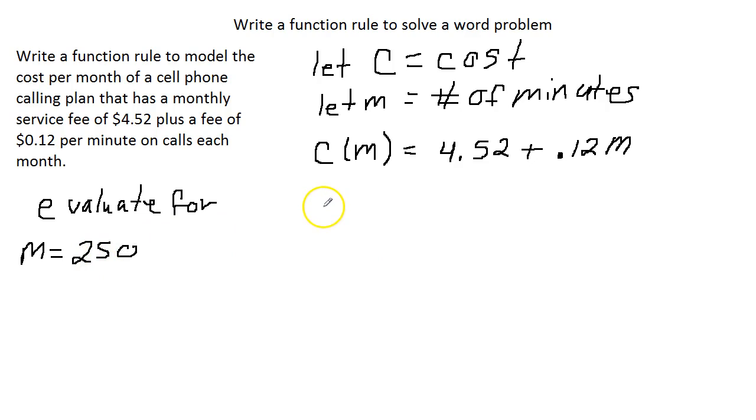So what we are going to do is we are going to plug 250 in for the M. So we say C of 250 equals 4.52 plus 0.12 times 250.